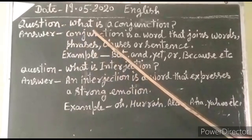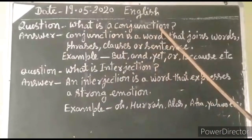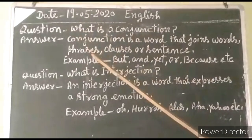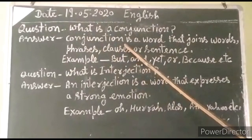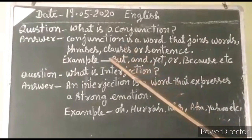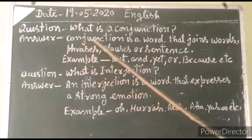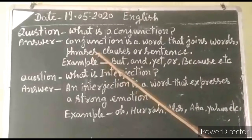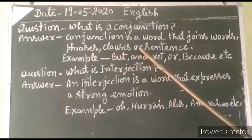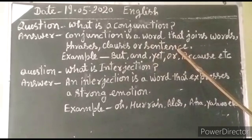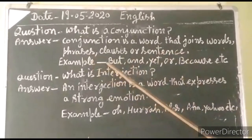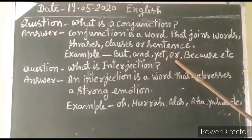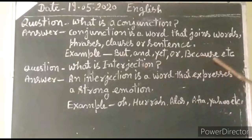What is a conjunction? A conjunction is a word that joins words, phrases, clauses, or sentences. Examples: but, and, or, because. It is easy.